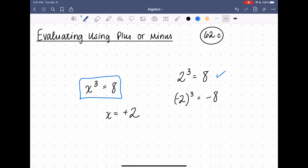So when the exponent is an odd number, I don't have to think about the plus or minus. But when that exponent is an even number, you have to make sure you remember that plus or minus.